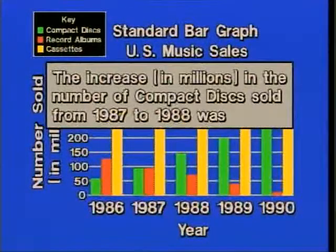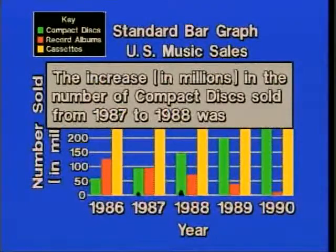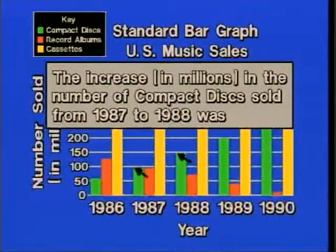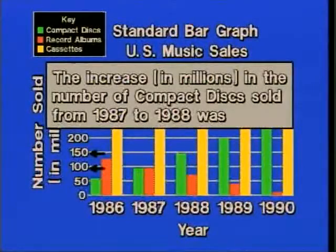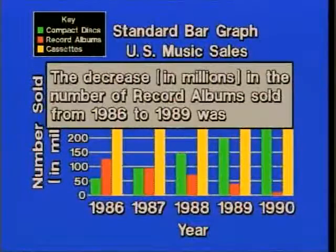What about the increase in millions in CDs sold from 1987 to 1988? We're only talking CDs, so we look at the green bars for those two years. Our attention goes to the left axis, and we look at the difference between those two bars — it looks like a difference of about 50 million. We look from the bottom to the top of a bar and then look over to the left.